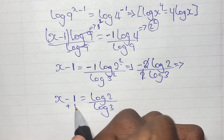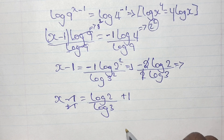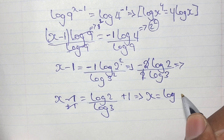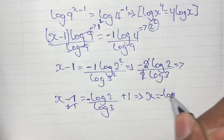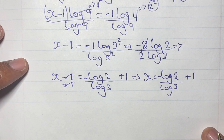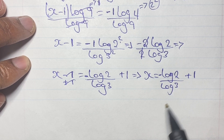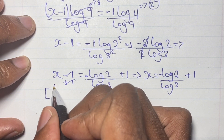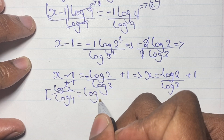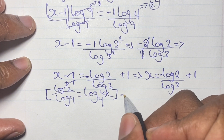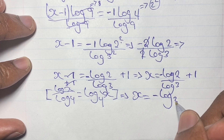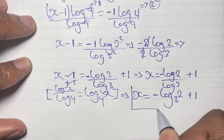Adding 1 to both sides, x equals negative log 2 over log 3, plus 1. Applying the change of base rule, where log x over log y equals log base y of x, we simplify to get the final solution: x equals negative log base 3 of 2, plus 1.